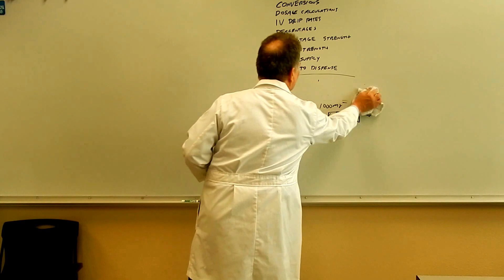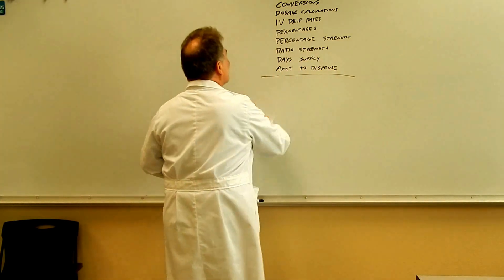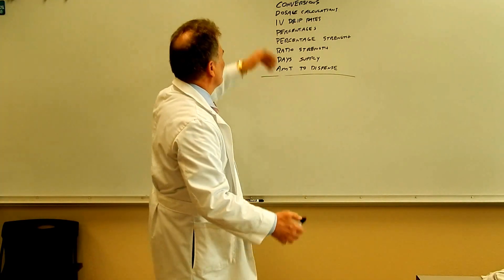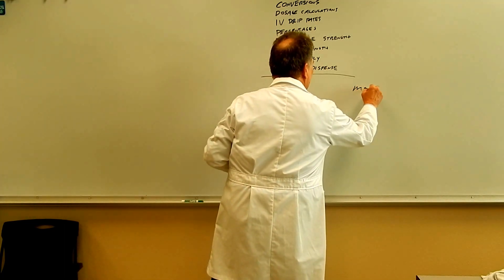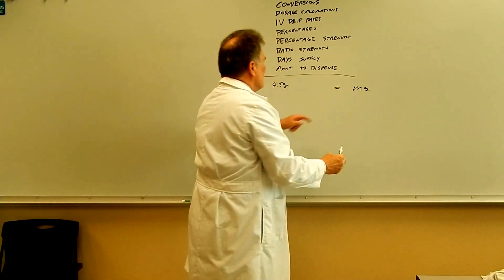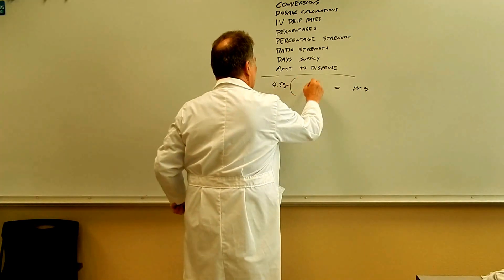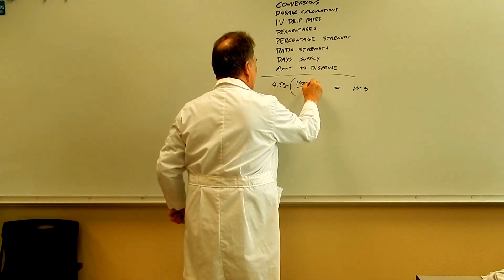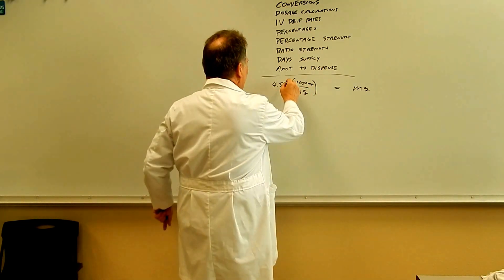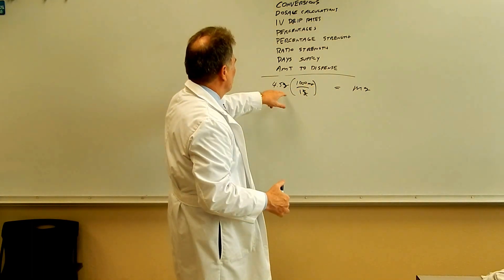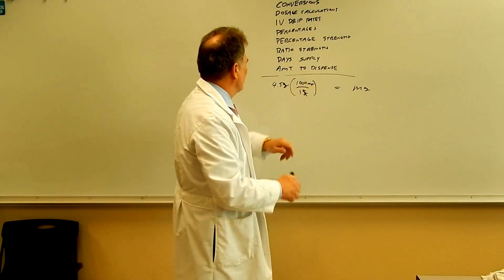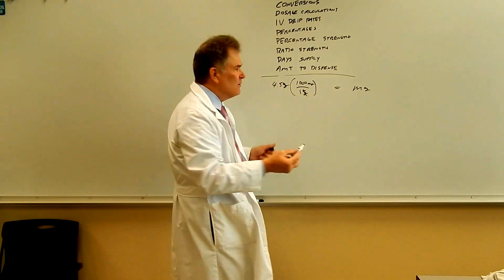Let's do one problem from each category to show how they're all similar. For a conversion: let's say we want to convert 4.5 grams into milligrams. The units of the answer are milligrams, the given is 4.5 grams, and the ratio is a thousand milligrams per gram. The grams cancel out and you're left with milligrams. So 4.5 times a thousand equals 4,500 milligrams.